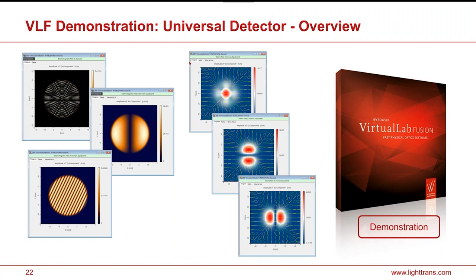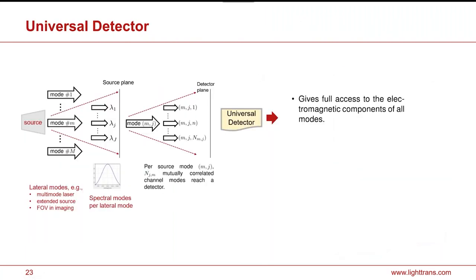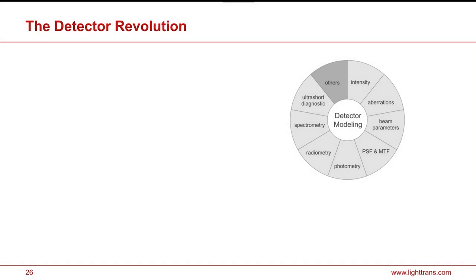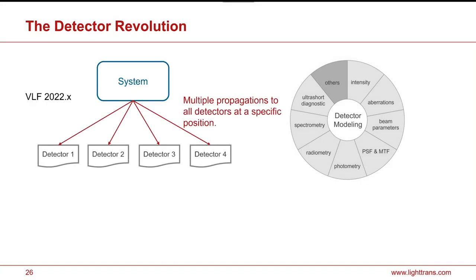Now comes the real revolution. We have full access to the electromagnetic components of all modes. We can work on gridded and gridless sampling points, sum correlated modes, and so on. This gives us the chance to calculate any detector function we like from the modes. We can deal with all the needs we have.